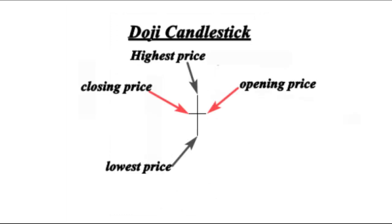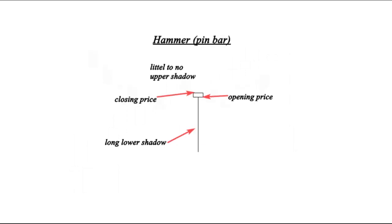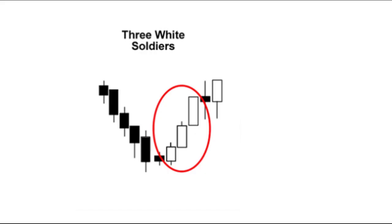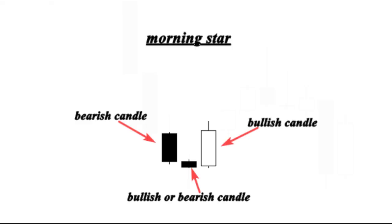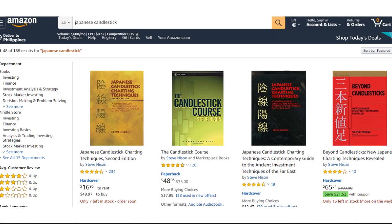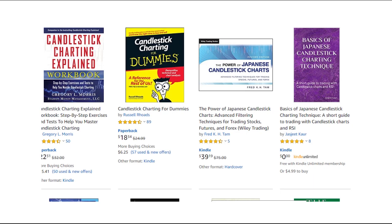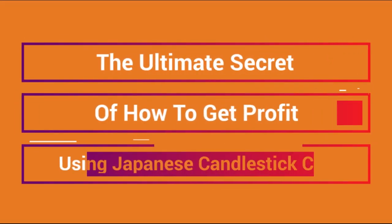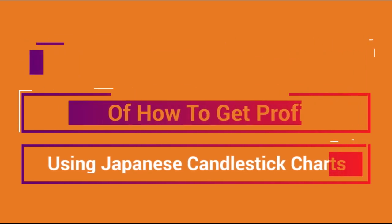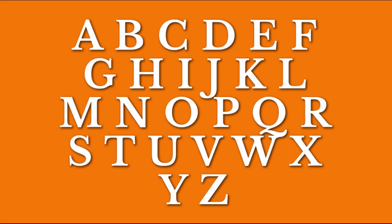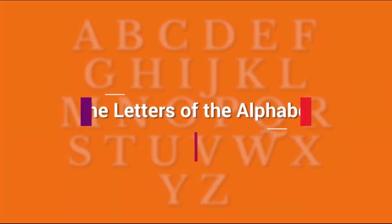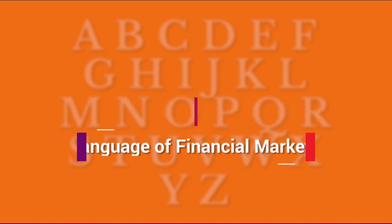In the beginning, everybody learns what a doji is, what a bullish engulfing candle is, or what a hammer is. How about the three Buddha top — is that a specific Japanese candle formation or just a chart formation? Three white soldiers, tweezer tops and bottoms, dark cloud cover, hanging man, morning star, evening star, the harami pattern. All this information is readily available, but none of it has much to do with the ultimate secret of how to get profit using Japanese candles. Before you can appreciate classic literature, you have to learn to read and write using the English language — the letters of the alphabet. That's what Japanese candlesticks really are: the letters of the alphabet in the language of reading financial markets.